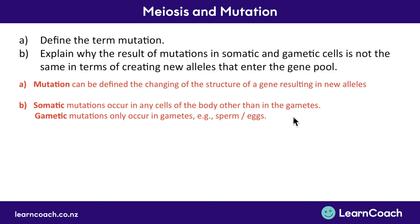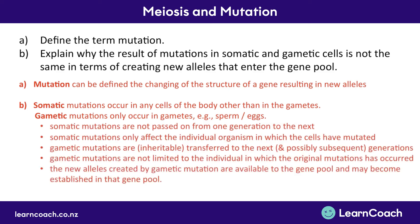Gametic mutations only occur in the sex cells — in the gametes, for example in the sperm and eggs. Somatic mutations aren't passed on; they only affect the individual because they're not in the gametes. In contrast, gametic mutations are inheritable — they get transferred to the next, and possibly subsequent, generations, so they're not limited to just the individual. The new alleles created by gametic mutations are available to the gene pool because they get passed on to other members of the population, and may become established in that gene pool.